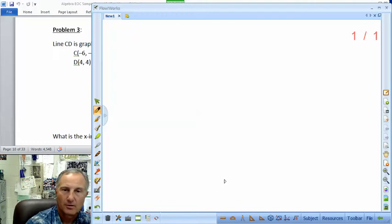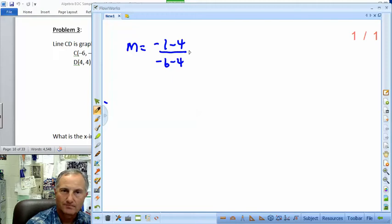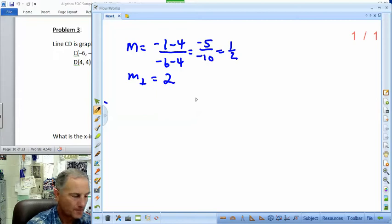We're going to find the slope of our first line. So we've got slope is going to be -1 minus 4, difference in the y's over the difference in the x's, -6 minus 4. So we're going to get -5 over -10. So that's one half. So the slope of the perpendicular is going to be -2. Negative reciprocal.